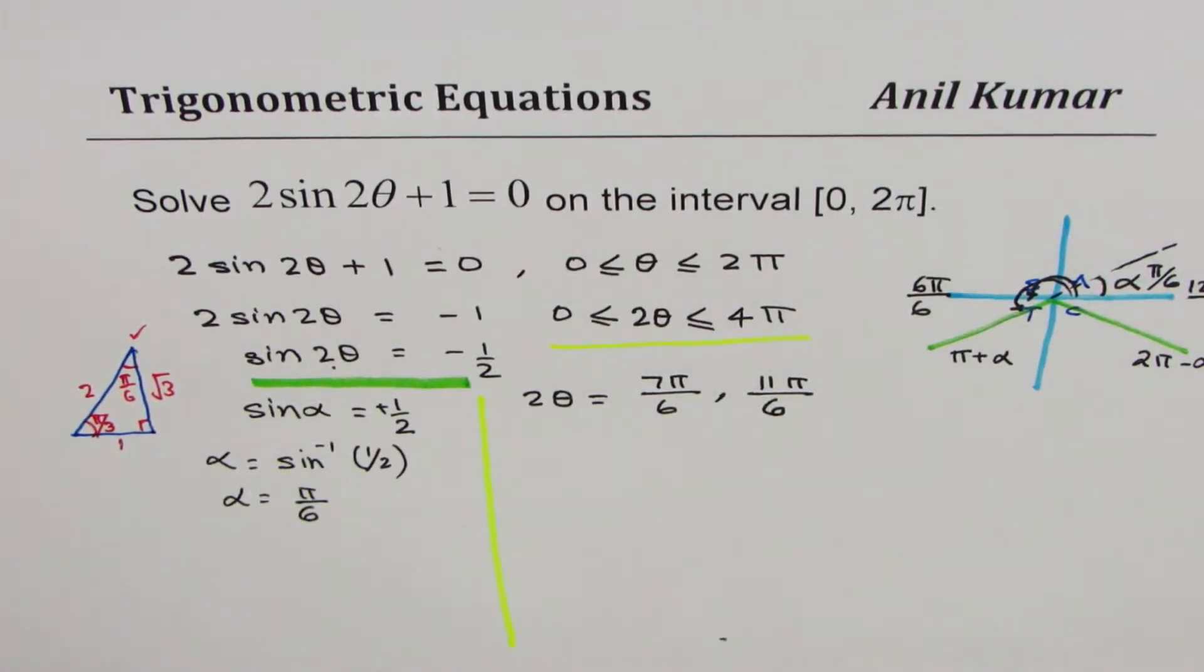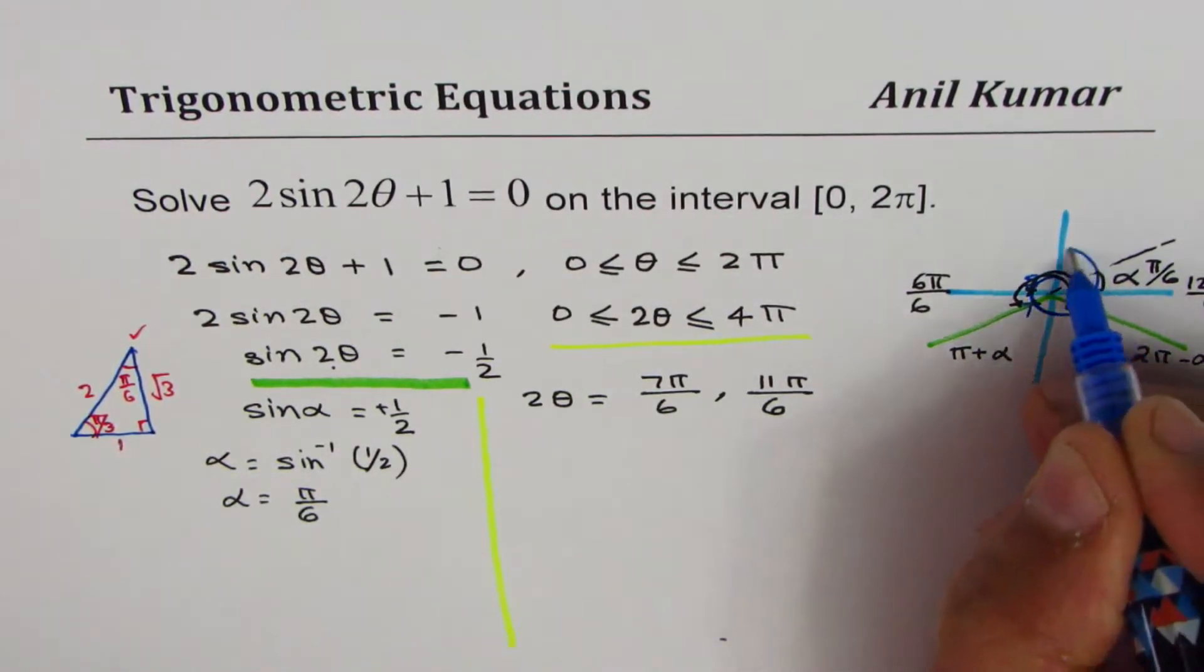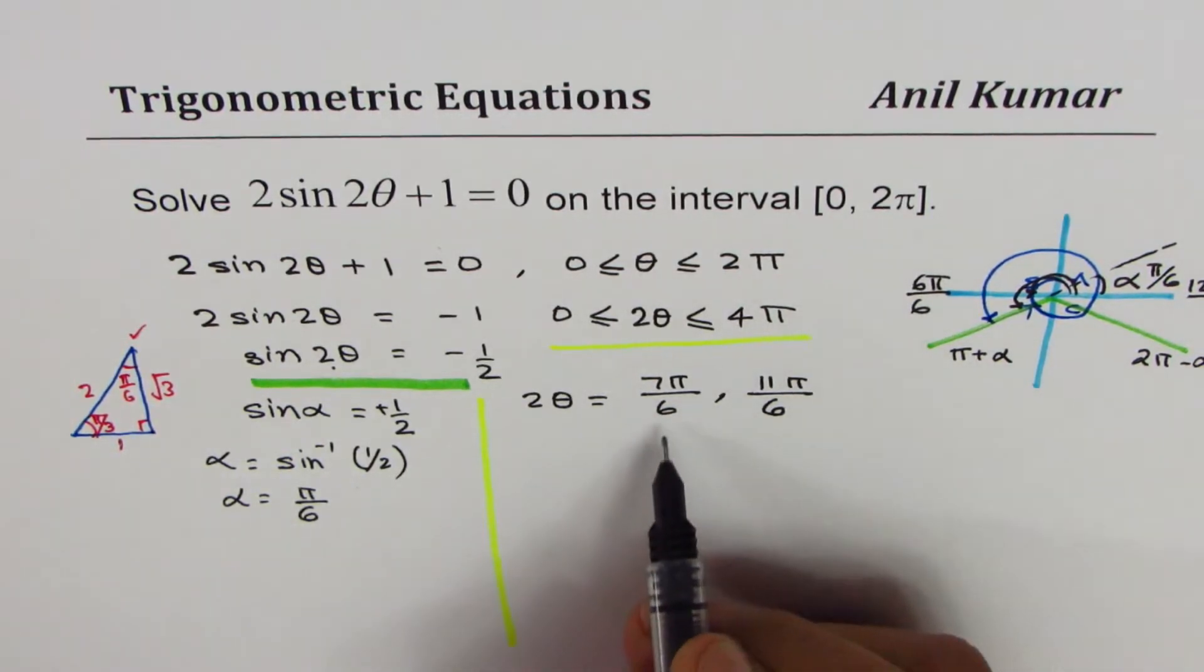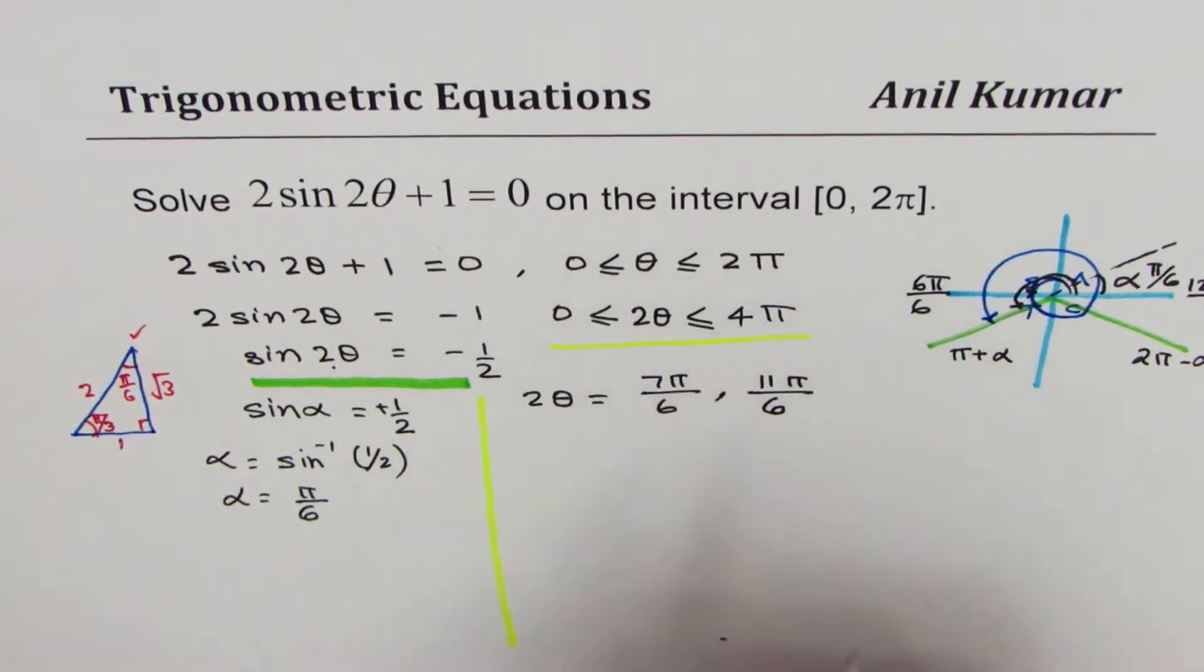Now that is up to 2π. Now we have to go one more round, so that means we are adding 2π to our answer, 2π to our answer, so if I add 2π to our answer, that is being between 0 to 4π.